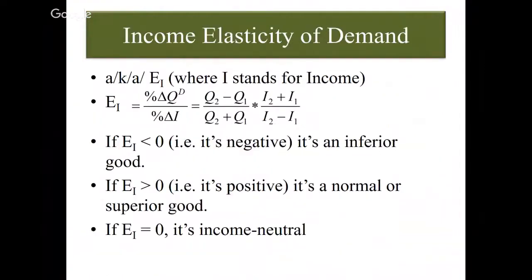The first elasticity is called income elasticity of demand, E sub I, where I stands for income. We're only going to be concerned with the point formula: percent change quantity demanded divided by percent change in income, not the midpoints formula. E sub I is not like E sub D. E sub D could be zero or negative but never positive. E sub I could be positive, negative, or equal to zero depending upon the relationship between quantity demanded and consumer's income. A negative E sub I means if income drops people buy more of the product or vice versa, tells you it's an inferior good.